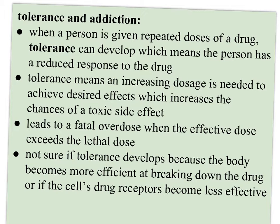A couple other terms are tolerance and addiction. When a person is given a repeated dose of a drug, tolerance can develop, which means the person has a reduced response to it. An increasing dosage will be needed to achieve the desired effects, which increases the chances of a toxic side effect. This leads to an overdose when the effective dose exceeds the lethal dose. Scientists aren't sure if tolerance develops because the body becomes more efficient at breaking down the drug, or if the cell's drug receptors become less effective, but certain drugs and medications do develop tolerance in the patient.